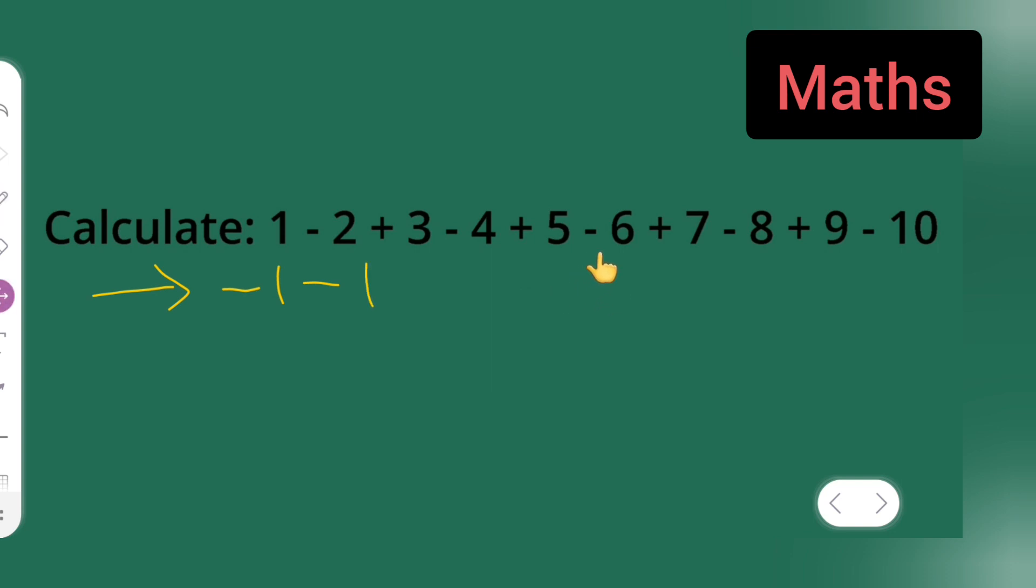Next 5 minus 6 will be again minus 1. Then 7 minus 8 will be again minus 1. Next 9 minus 10 will be again minus 1.